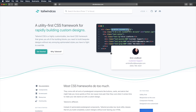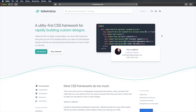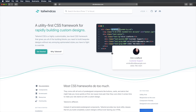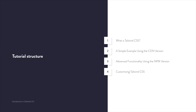Tailwind CSS is a highly customizable CSS framework that you can use to quickly build web pages. It works by providing a list of classes you can use to control every visual aspect of your page, from margins and paddings to the way text is displayed. Here's a breakdown of what you'll learn in this tutorial: first, we'll take a closer look at what Tailwind is all about and how it's different from other CSS frameworks. Then, we'll install the framework using the CDN version and build a simple demo. In part 3, we'll use the NPM version and explore some of the more advanced functionality. And finally, we'll learn how to customize Tailwind.